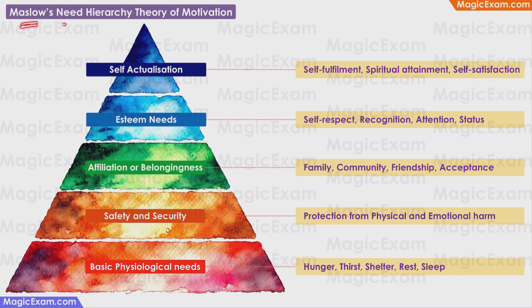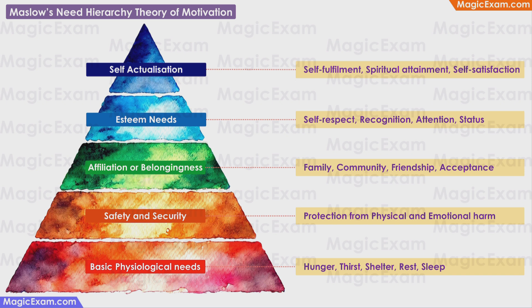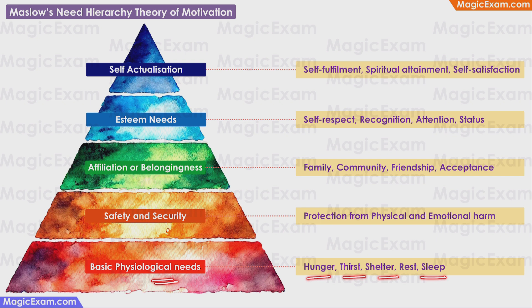The next topic is Maslow's need hierarchy theory of motivation, one of the most important and simplest theories explaining motivation. This theory says that people are motivated by various needs, and these needs can be organized in a hierarchy. If the basic or lower level needs are not met, people will not be interested in higher level needs. And once the lower level needs are satisfied, they will no longer motivate people — people then start looking at the next level needs. For example, the basic physiological needs like hunger, thirst, shelter and sleep are the basic motivators. If a person is extremely hungry or thirsty or sleepy, they cannot think of anything else and will do whatever is required to satisfy these basic physiological needs.